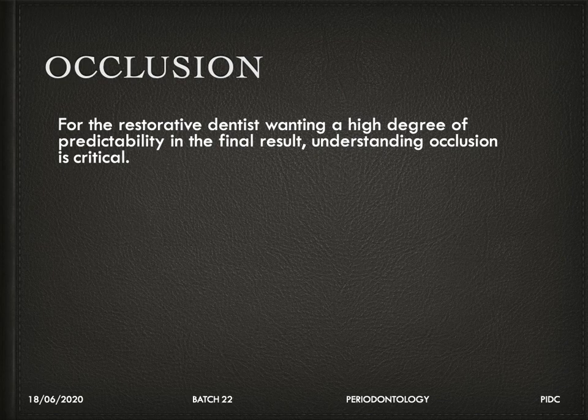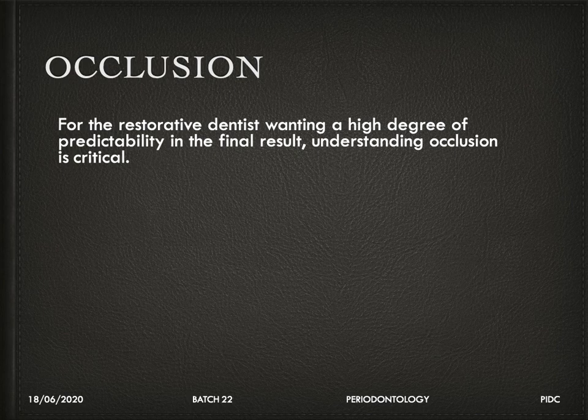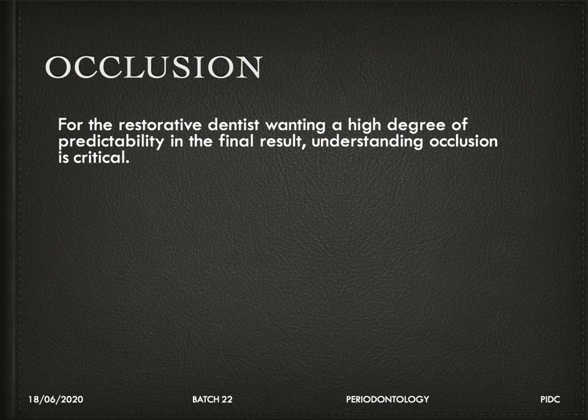The next interdisciplinary problem is occlusion. For a restorative dentist wanting high predictability, occlusion must be understood before placing any restoration. Even minimal high points in the occlusion can result in periodontal destruction, angular bone loss, or mobility. A mild high point on a restoration may lead to periodontal breakdown. The periodontist's role is to evaluate the restoration to ensure there are no high points that impair periodontal health.